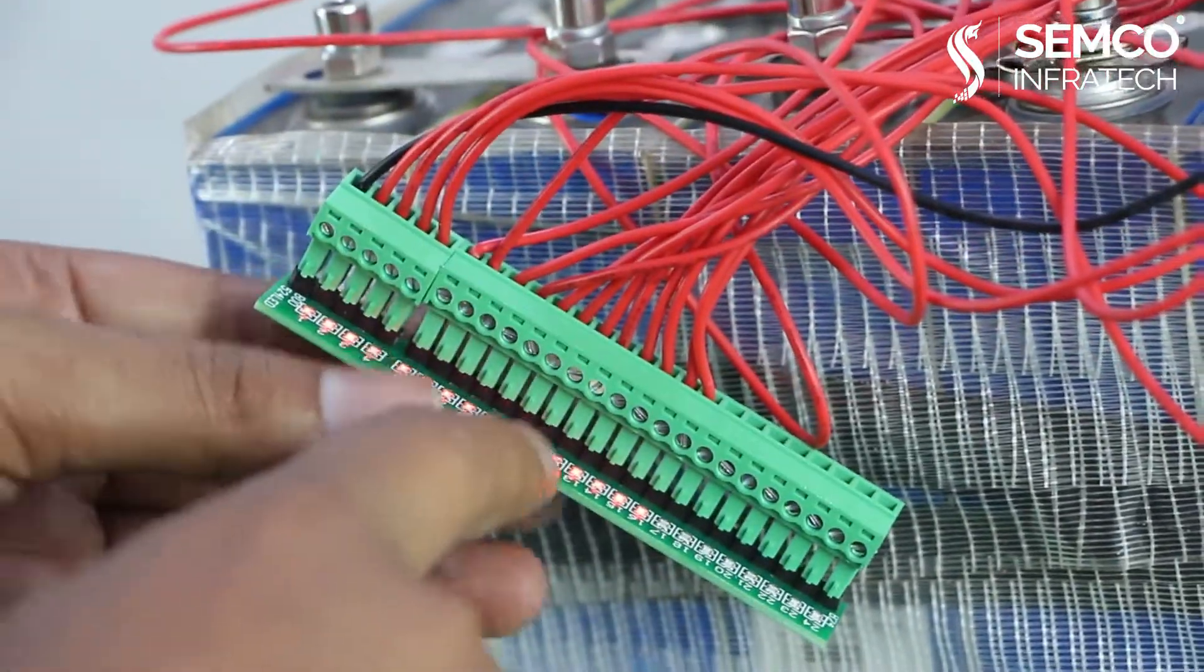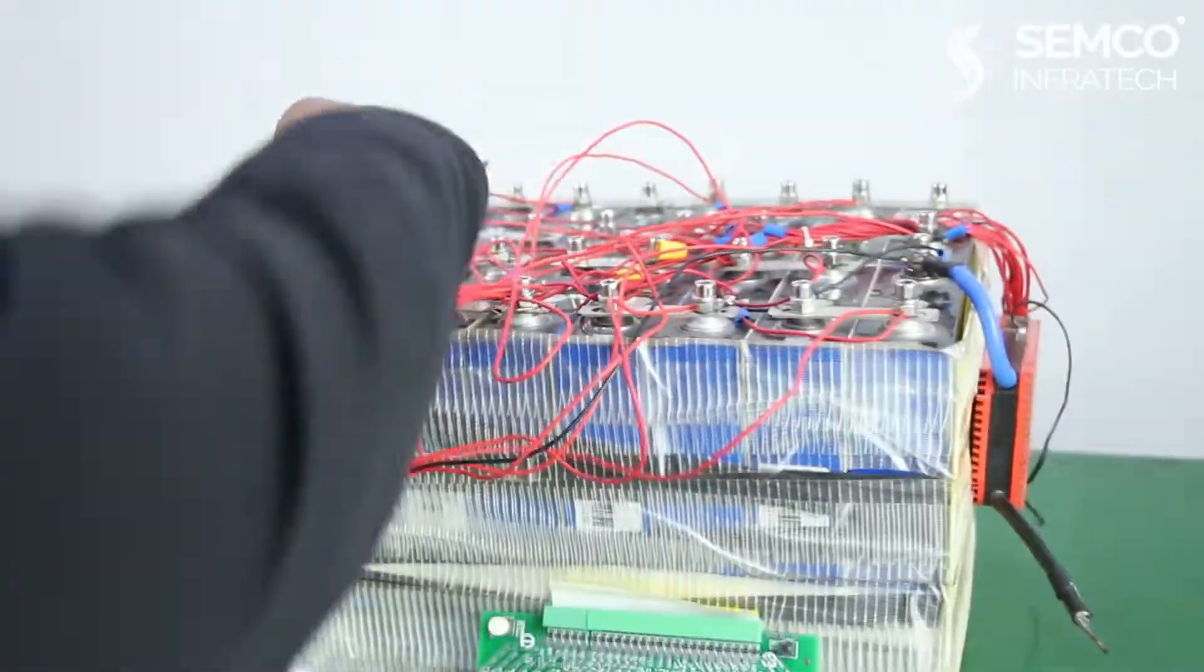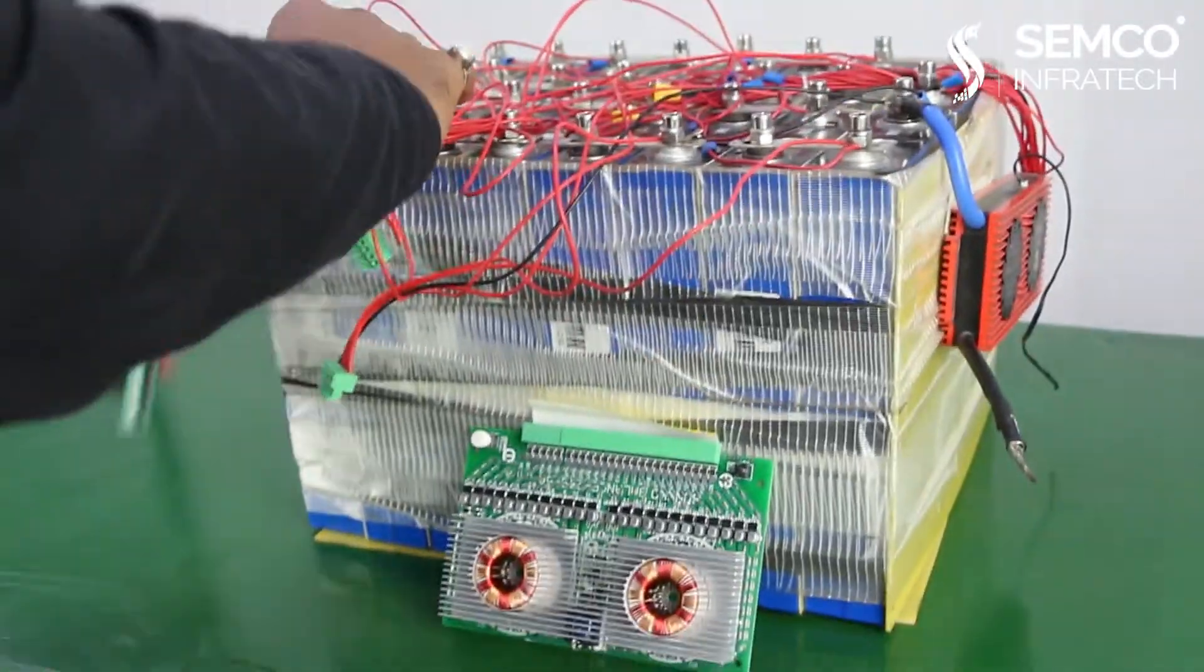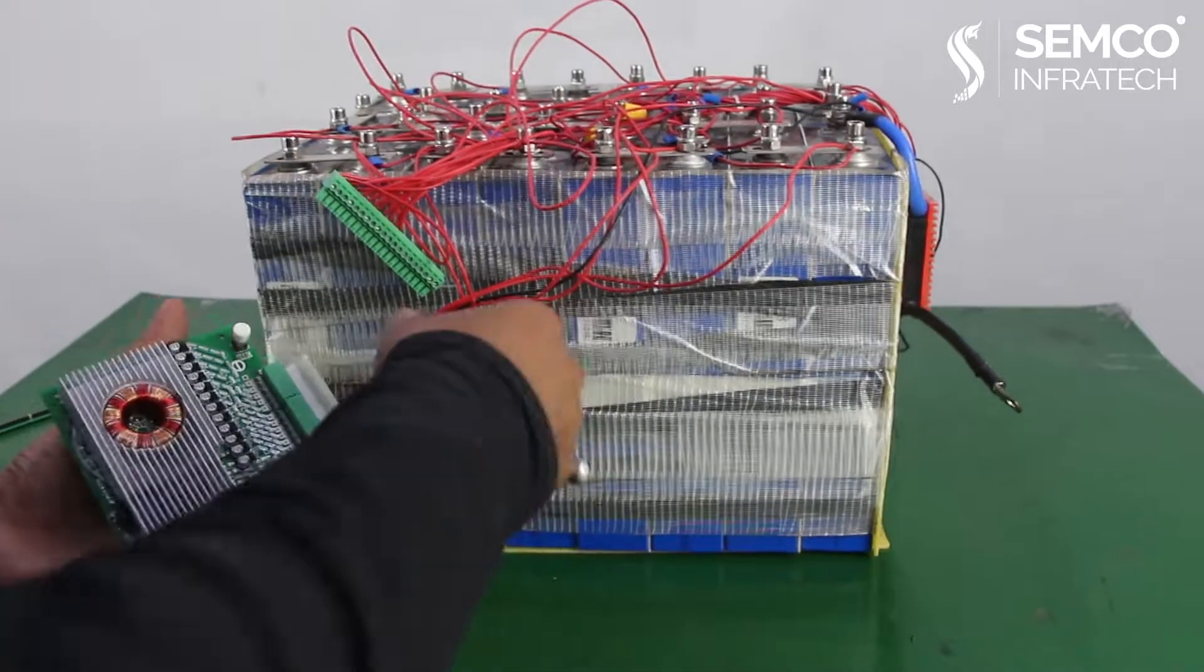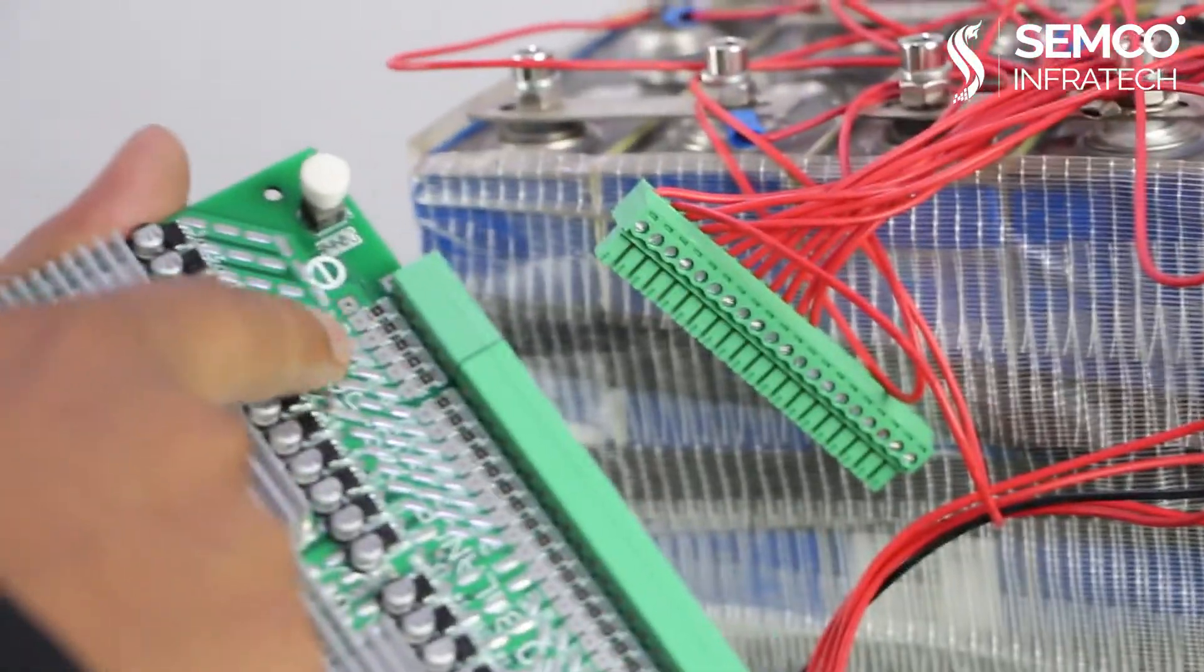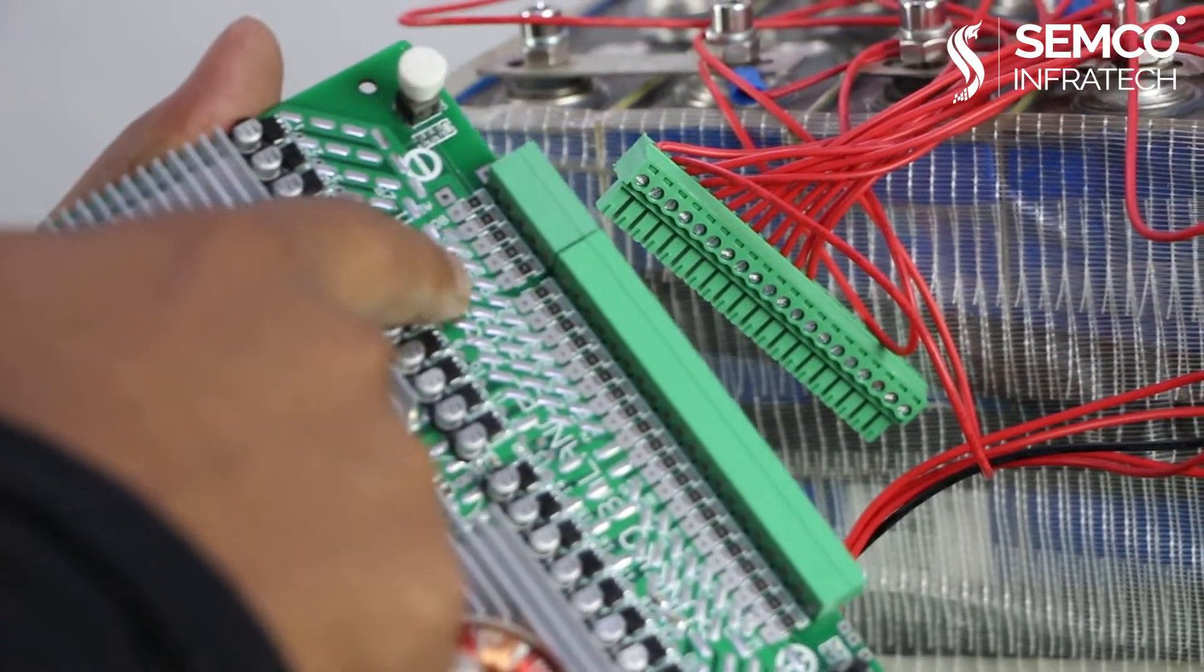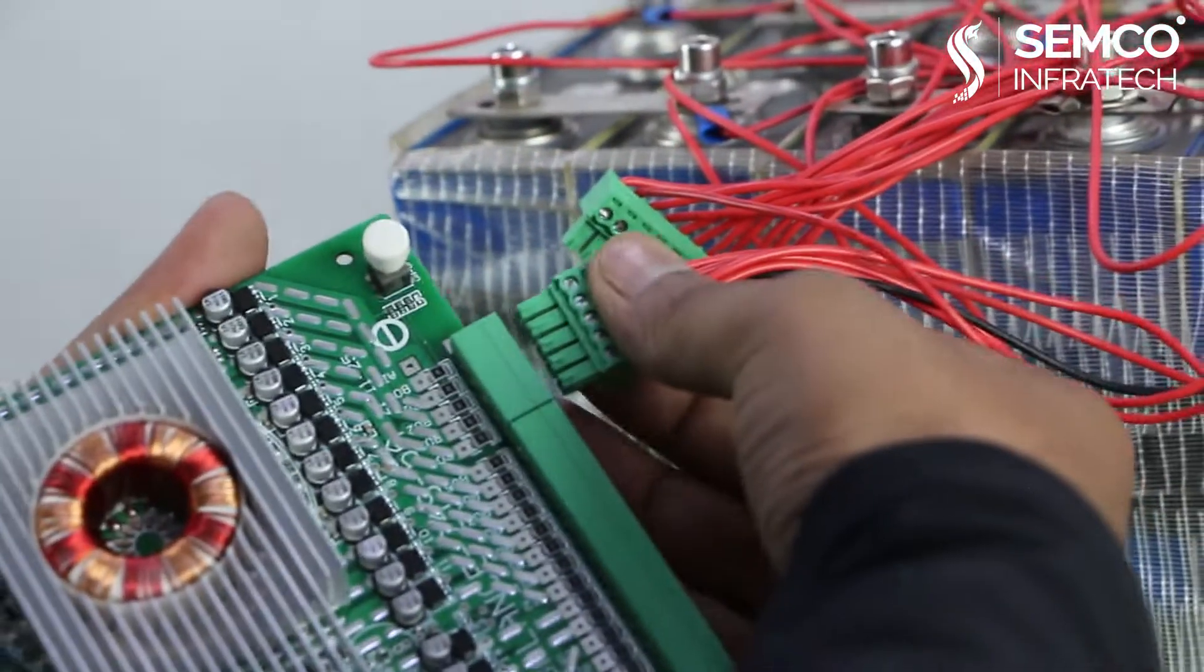If there is any one light is not blinking, that means the connection is not good. Now we connect with the machine. Here this is for negative, B1, B2, B3, B4, and so on. So now we connect.